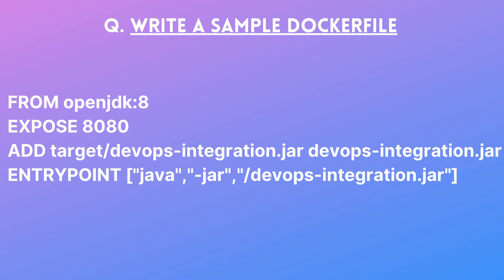Then we have `ENTRYPOINT`, which is the first command executed as soon as the Docker container starts. The command is: `["java", "-jar", "<artifact_name>.jar"]`. This is the same as running `java -jar <artifact_name>.jar` to execute a JAR file. That is how you write and explain a simple Dockerfile to an interviewer.